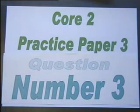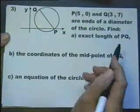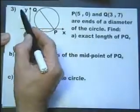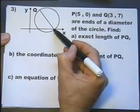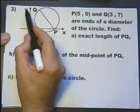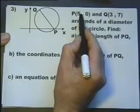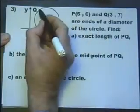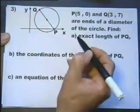Welcome to practice paper number three, question number three. We have P with coordinate (5,0) and Q with coordinate (3,7). It says P and Q are the ends of a diameter, so this goes through the center—that's the diameter.